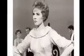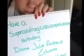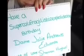Do, a deer, a female deer. Re, a drop of golden sun. Me, a name I call myself. Fa, a long, long way to run. So, a needle pulling thread. La, a note to follow so. Tea, a drink with jam and bread. That will bring us back to Do.